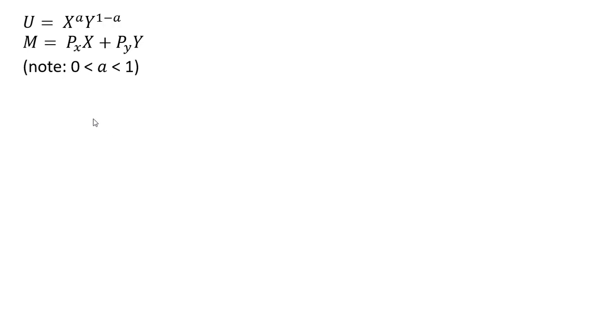Now let's solve for the consumer's demand for good X and good Y. We're going to start by getting the marginal utility of good X, taking the partial derivative of the utility function with respect to good X. This exponent on the X term comes down in front, and then we're going to subtract 1 from that exponent. And that is our result.